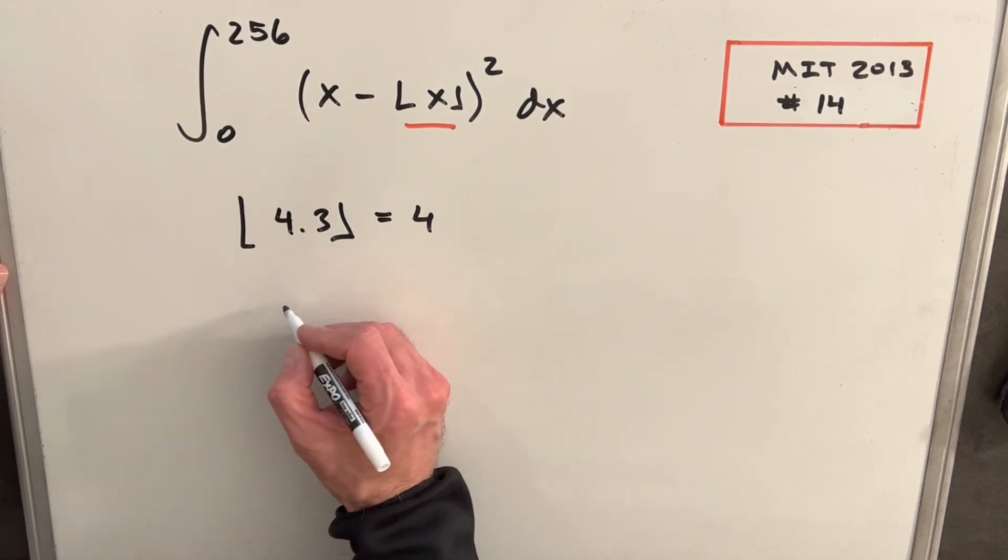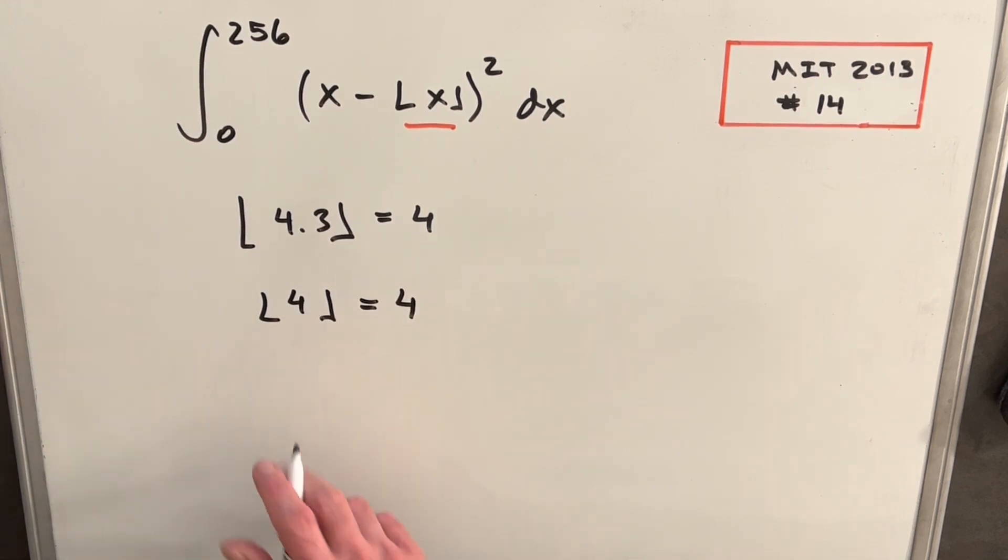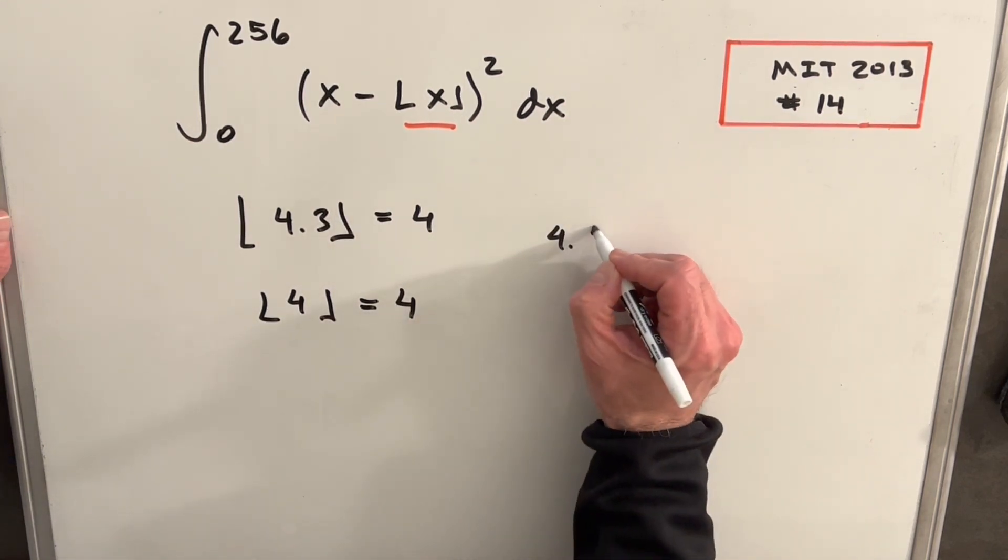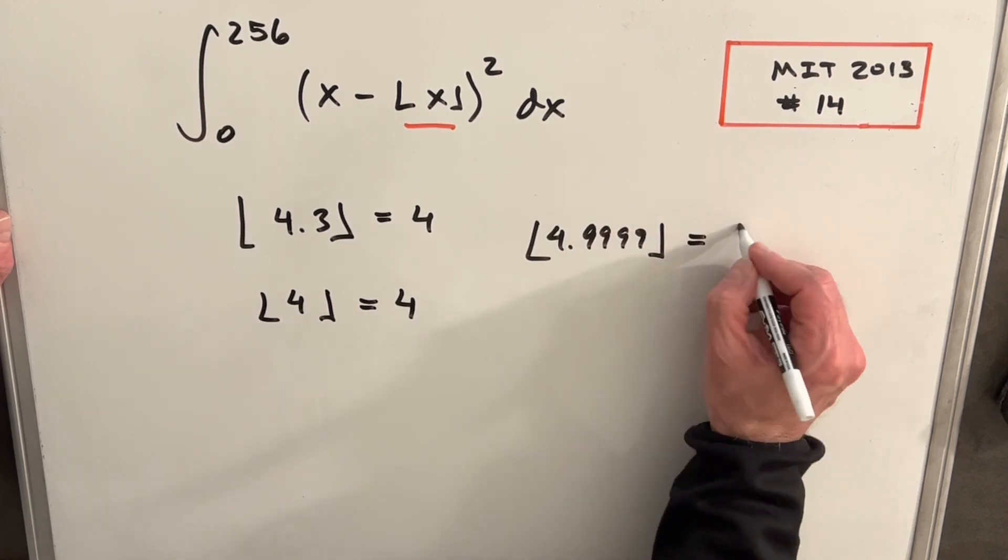If we just had 4, a floor of 4 is 4 because we're already at 4. And even if it was like 4.999, the floor is going to take us down to 4.